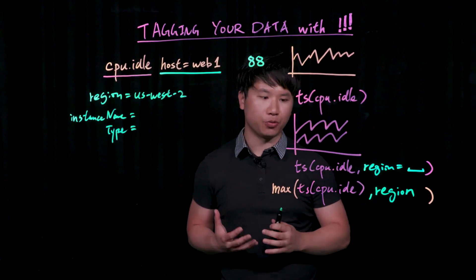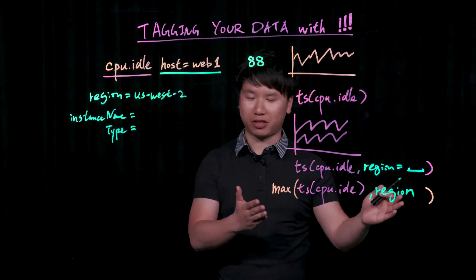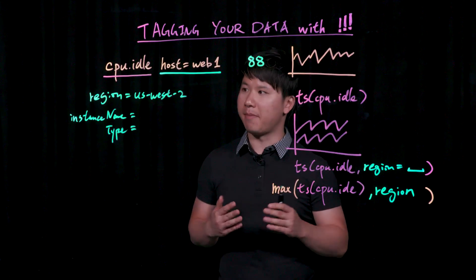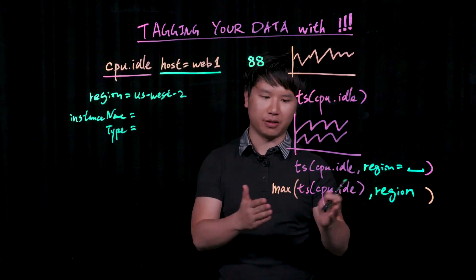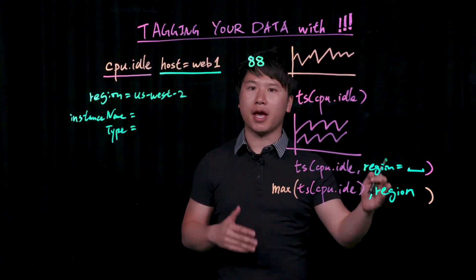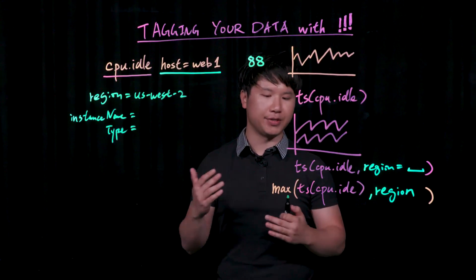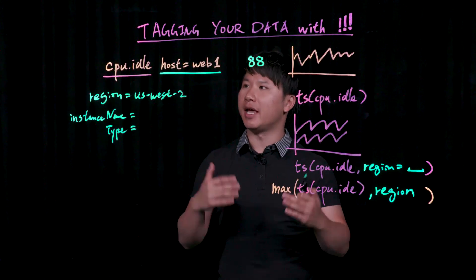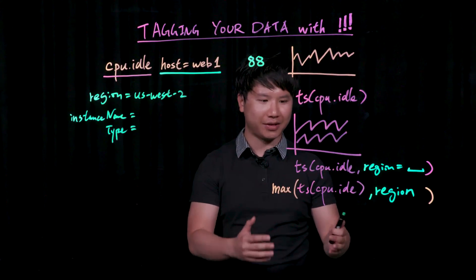It is very similar to a SQL group by, but in much less characters. You could basically pull out the max CPU utilization. In this particular case, it's the idle, so it's flipped. For all regions, and you would be grouped by the region, so you actually see the time series within each region as a single time series that is the max.